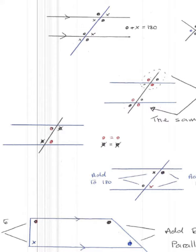Then, if you look at the angles inside the parallel lines, you'll notice that the cross and the cross are the same, and the dot and the dot are the same. We call these alternate angles.